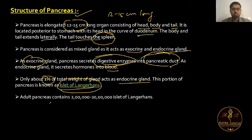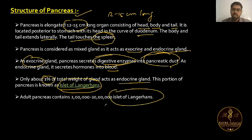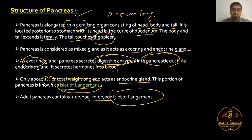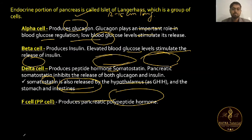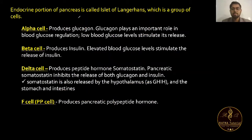In an adult, the number of Islets of Langerhans can range from 2 lakh to 20 lakhs. The endocrine portion is called the Islets of Langerhans, which is a group of cells.